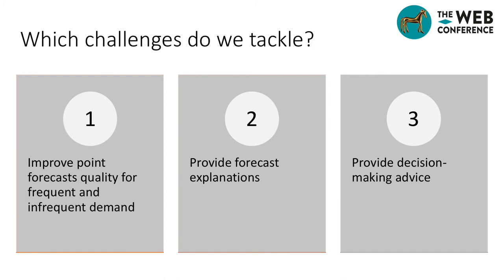Finally, we found that though it is accepted that forecast explanations should be actionable, little research was done on how to provide them, especially for regression models. Regarding decision-making advice, we found that many techniques were developed to aid decision-making in manufacturing, such as multiple objective optimization techniques or simulations. However, little research was done on how explainable artificial intelligence affects decision-making.